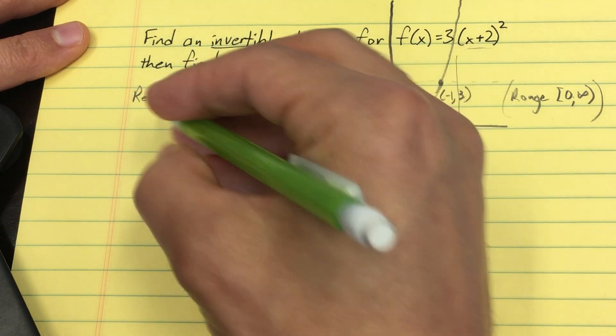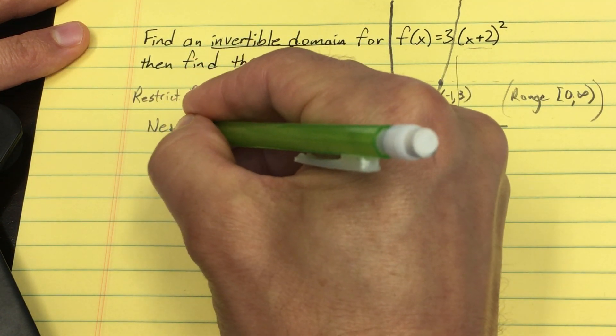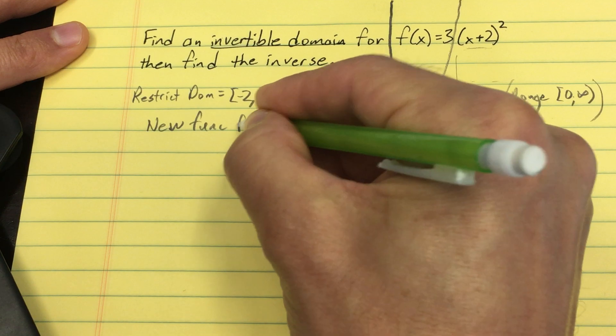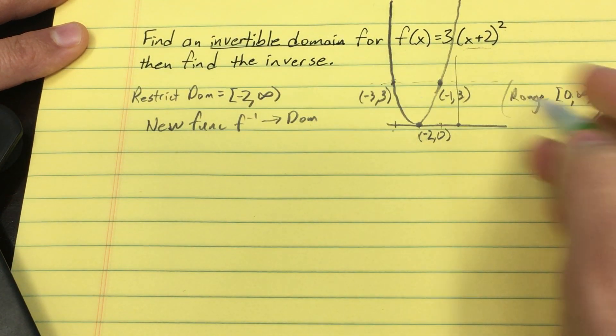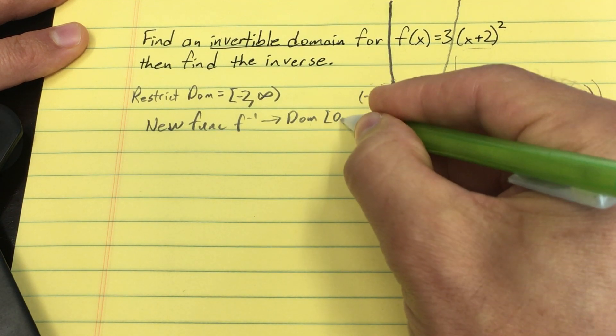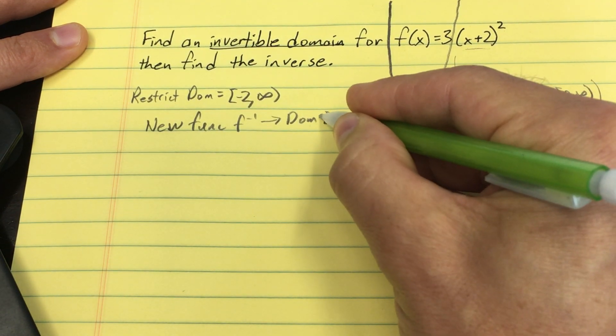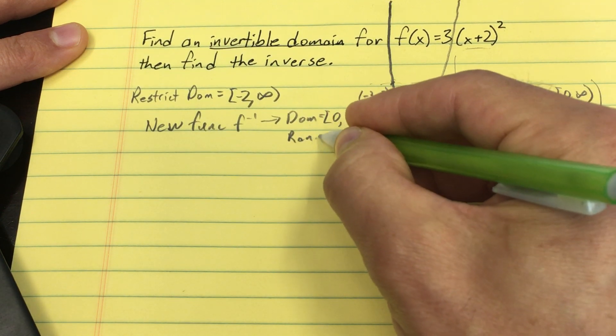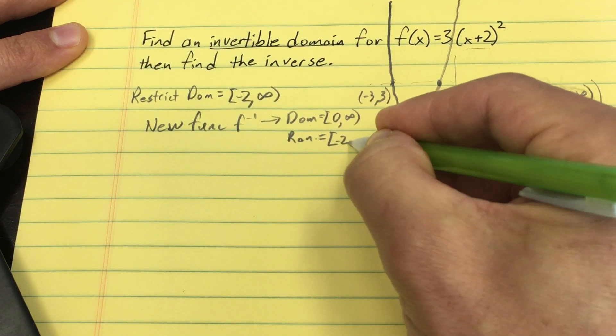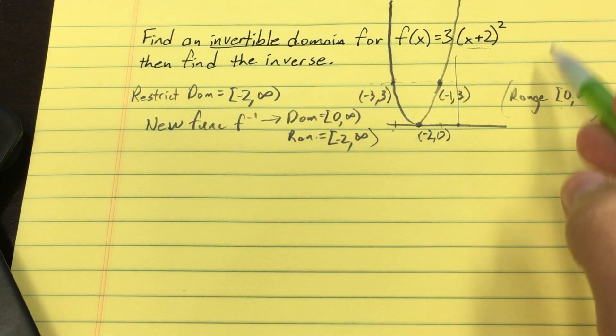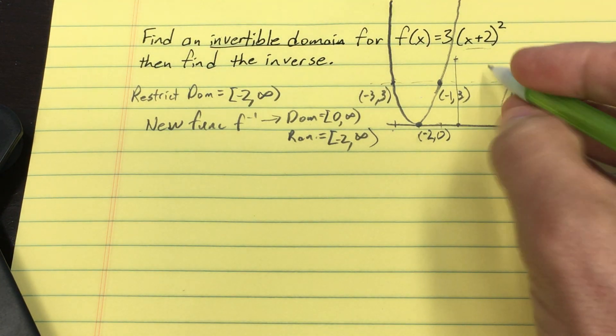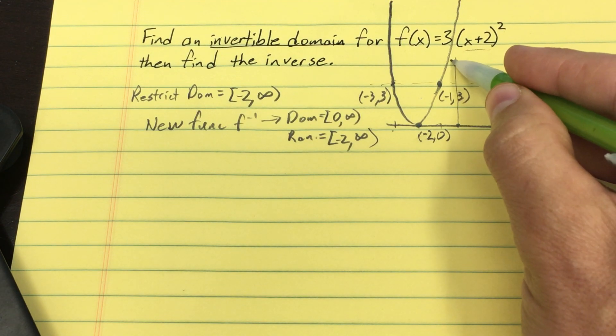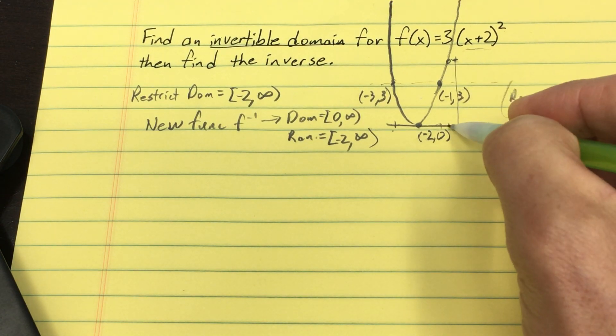My new function, f inverse, has domain [0,∞) and then its range is equal to [-2,∞). So this new function I'm supposed to say, what value of x would give me a height this high? I'll go over here and say, well, this value of x would, of course.